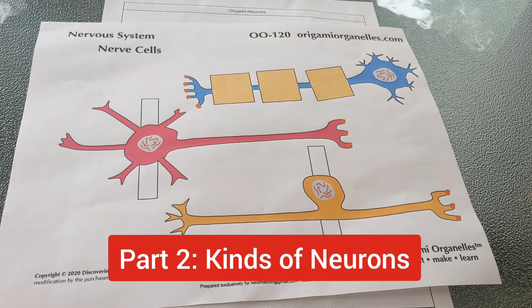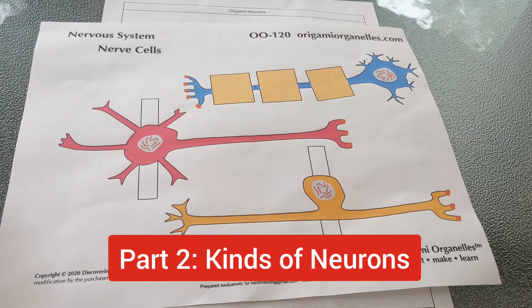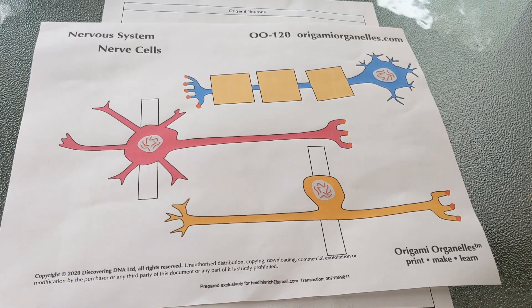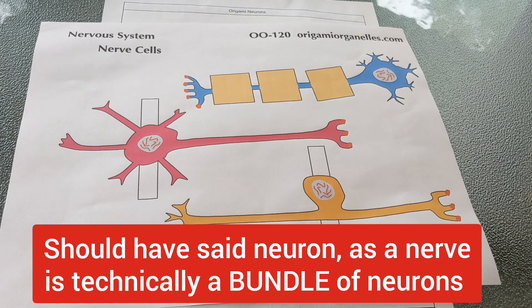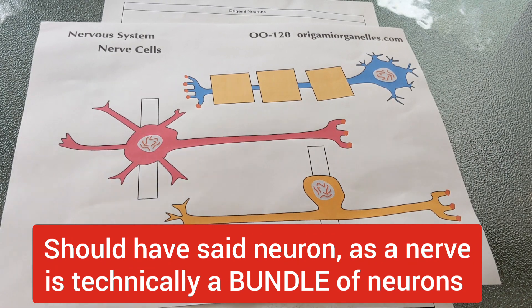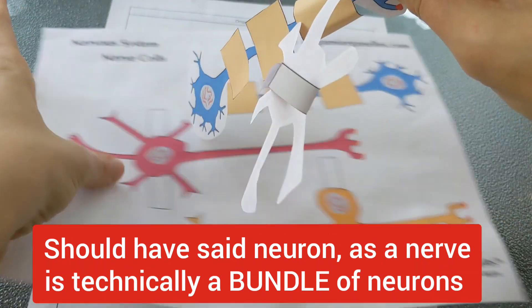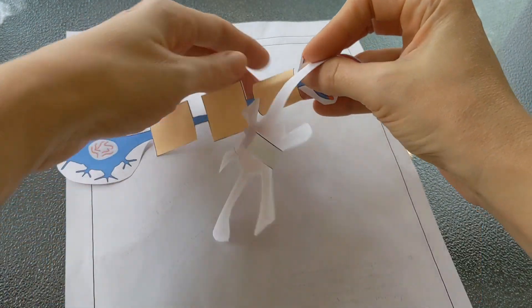Part two of this activity is learning about the three main kinds of nerve cells. You're going to use this piece of paper in order to learn about the kinds of nerve cells. You want to cut out each nerve and I'm going to show you my cut out versions of the nerves.